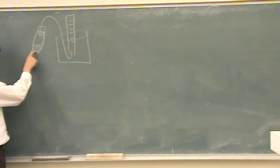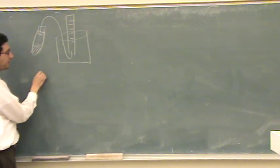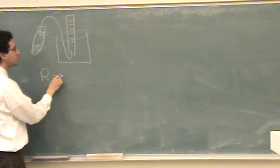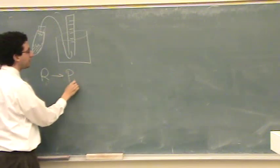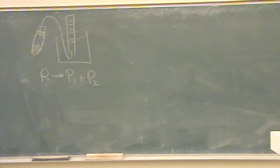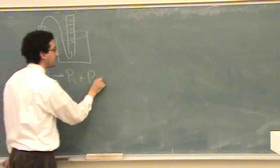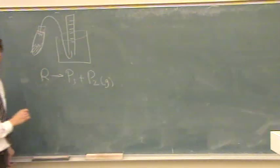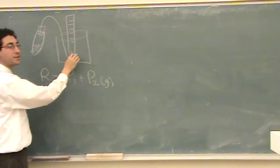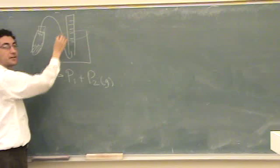So what happens is this reactant, I'll just call it R, goes to, let's say, product 1 plus product 2. And one of these products is gas. And so, this beaker has liquid, and this is filled with liquid to start off with.